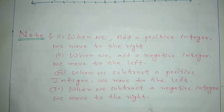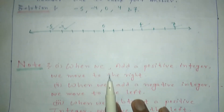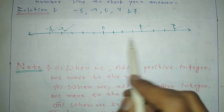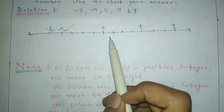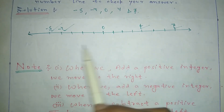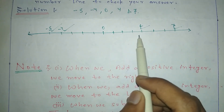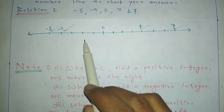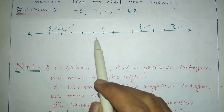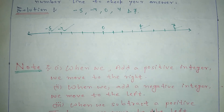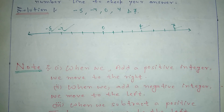The third point: when we subtract a positive integer, we move to the left on the number line. This is the opposite of addition — when we add a positive number we move right, and when we subtract a positive number we move left.